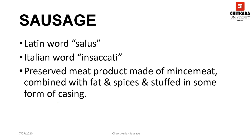Sausage is a generic term for a wide range of preserved meat products made of mince meat combined with fat and spices and stuffed in casing. A sausage could be preserved by cooking, smoking, or drying, or at times stored fresh, chilled and cooked at the time of serving. The word sausage is said to be derived from the Latin word 'salus,' which means salted, as in olden days meat used to be salted for preservation. Gradually, families perfected recipes and handed them down for generations to create signature products, which elevated sausage making into an art.